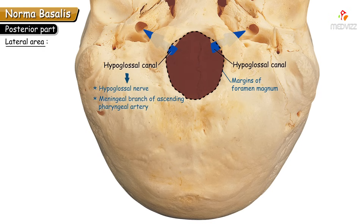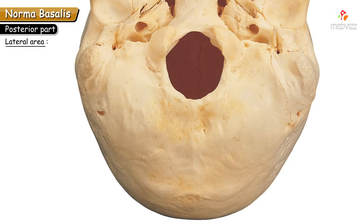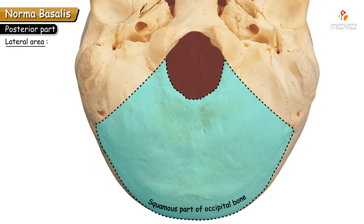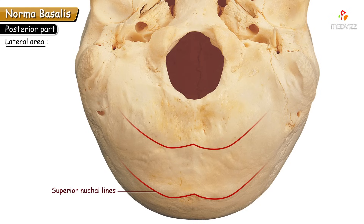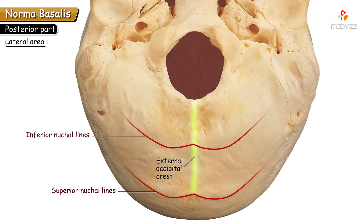The hypoglossal canal also transmits the meningeal branch of the ascending pharyngeal artery and an emissary vein. The other lateral areas are formed by the squamous part of the occipital bone, marked by the superior nuchal lines on each side — well-defined ridges on each side of the external occipital protuberance. The inferior nuchal lines run parallel to the superior nuchal lines on each side of the external occipital crest.